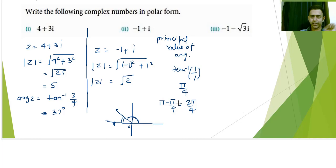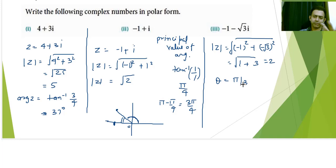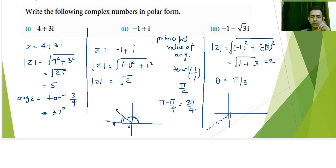For the third part, z = -1 - √3i: modulus of z = √((-1)² + (-√3)²) = √(1 + 3) = √4 = 2. For the argument, removing the negative signs, tan⁻¹(√3/1) = tan⁻¹(√3) = π/3 (since tan 60° = √3). This is the principal value. Since both real and imaginary parts are negative, the point lies in the third quadrant.